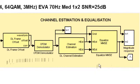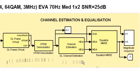We equalise the channel effect by estimating the channel and using this estimate to correct the received resource grid. The algorithm used to estimate the channel interpolates between the channel values obtained using cell-specific reference signals, creating a matrix which represents the channel's impact on the transmitted resource grid.